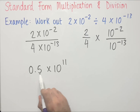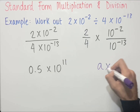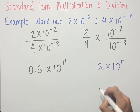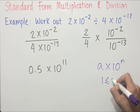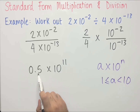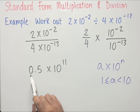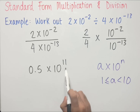Now we check if this number is in standard form. Remember, a number is in standard form if it is written as a times 10 to the power of n, where a is greater than or equal to 1 but less than 10, and n is a whole number. 0.5 is not between 1 and 10, so we need to rewrite this. We notice that 0.5 times 10 gives us 5, and 5 is between 1 and 10. So if we use one of these 10s and multiply it with 0.5, we'll get a number that's in standard form.